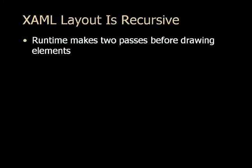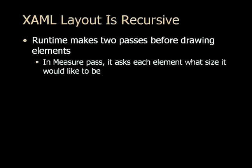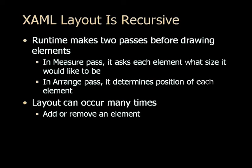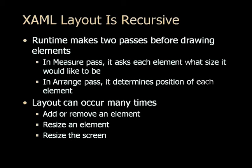XAML layout is recursive, and the runtime makes two passes before it actually draws any elements. In the measure pass, it asks each element what size it would like to be — for example, it looks at the text in a button and determines what size is needed to display that text. In the arrange pass, it determines what position each element should be in. This layout can occur many times: if you add or remove an element, resize an element, or resize the screen or window, the layout system will make the same two passes again.